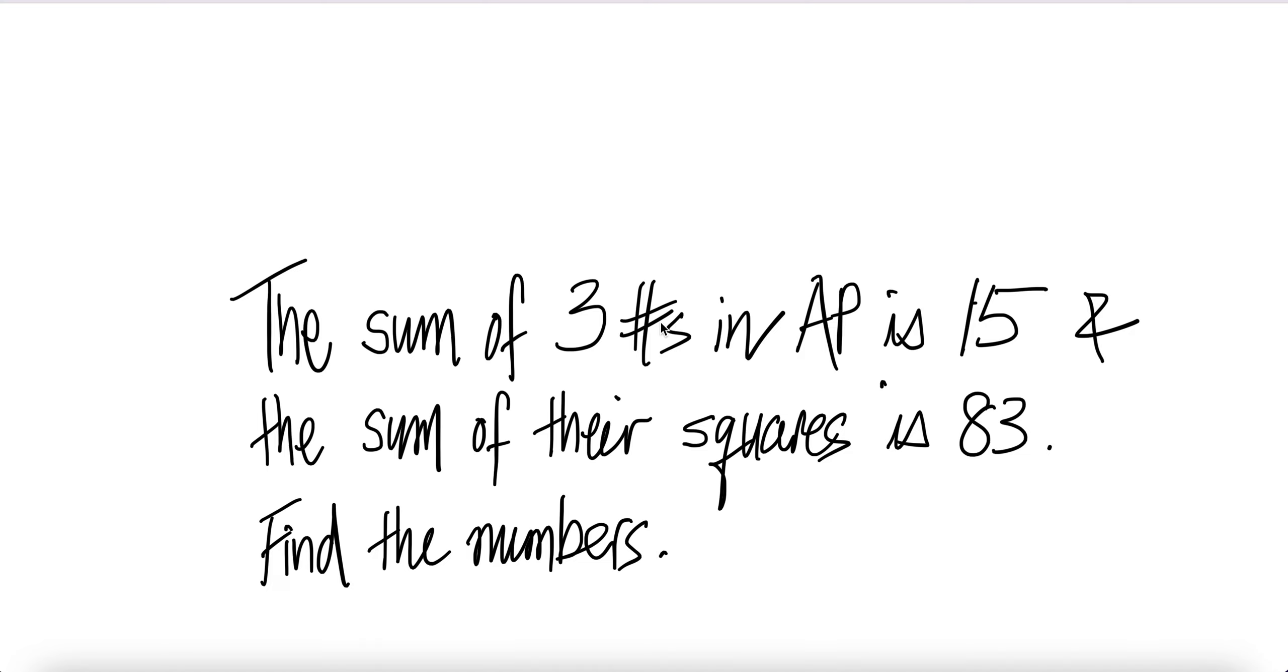The sum of three numbers in AP is 15. AP here is arithmetic progression or arithmetic series. And the sum of their squares is 83. Find the numbers.